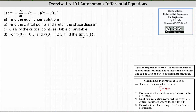We're given an autonomous differential equation. Part A, we're asked to find the equilibrium solutions. Part B, we're asked to find the critical points and sketch the phase diagram. Part C, we're asked to classify the critical points as stable or unstable. And then Part D, we're asked to find the limit as t approaches infinity of x of t, when x of zero equals 0.5 and x of zero equals 2.5.